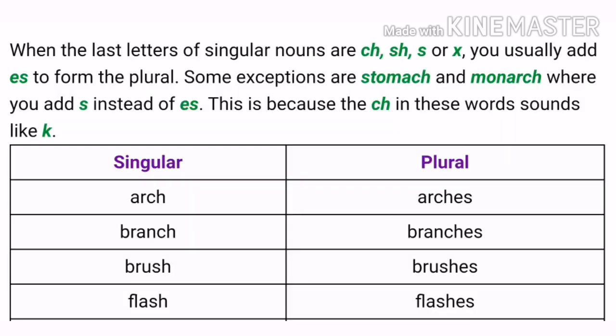But when the last letters of singular nouns are CH, SH, S, or X, you usually add ES to form the plural. For example, see the first one: arch. This noun ends with the sound CH. When a word ends with those letters, you need to add ES. So it becomes arches. See the next one: branch. Here the noun ends with the letters CH, so we added ES — it becomes branches. Next: brush. This word ends with the letters SH, so we added ES — it becomes brushes.